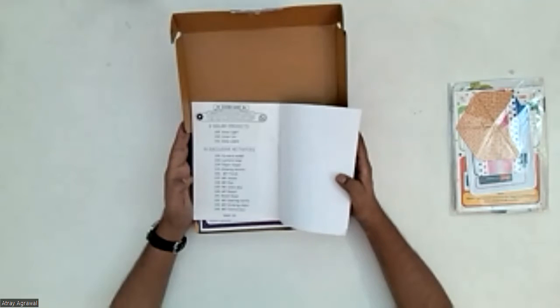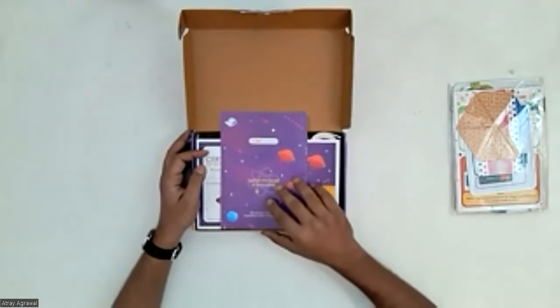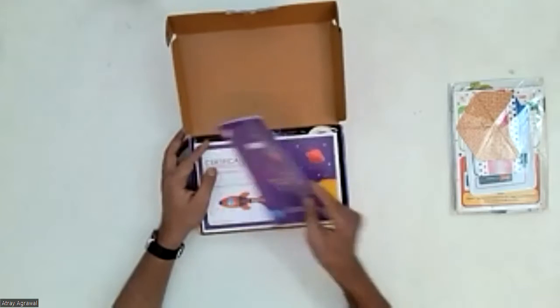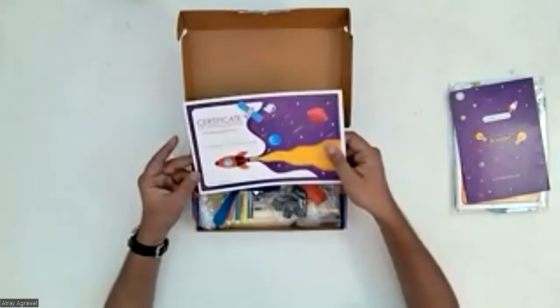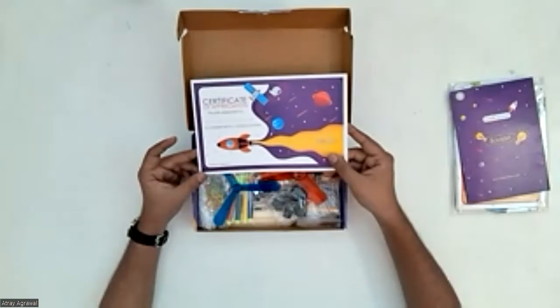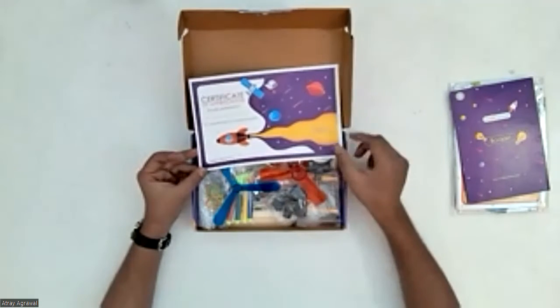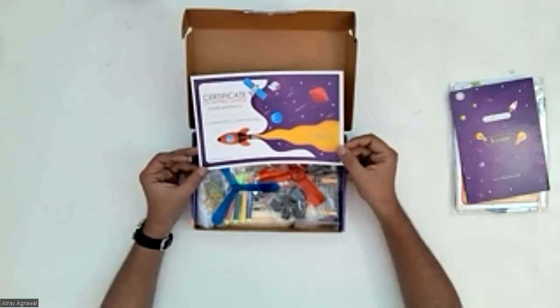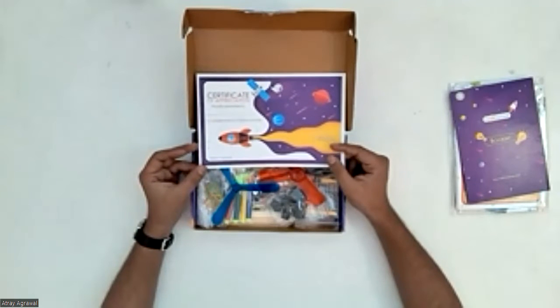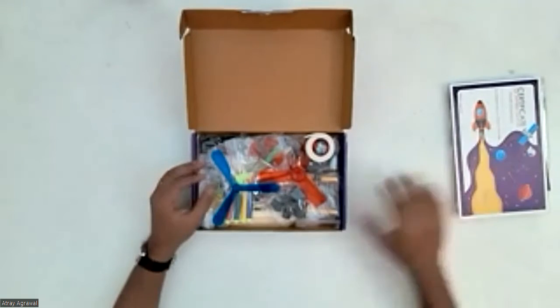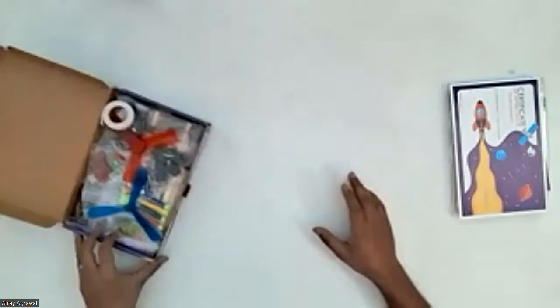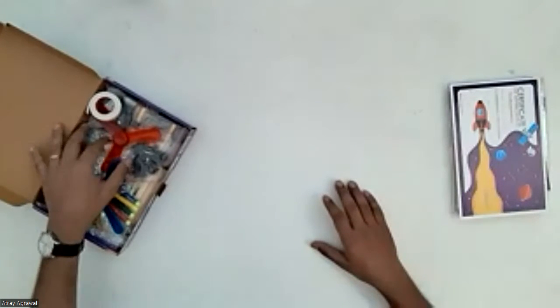By Kit for Curious, you can make 144 different activities. Another thing that's right here is this certificate of appreciation where you can put your name and write the parent's signature, but I hope you don't cheat in this one.